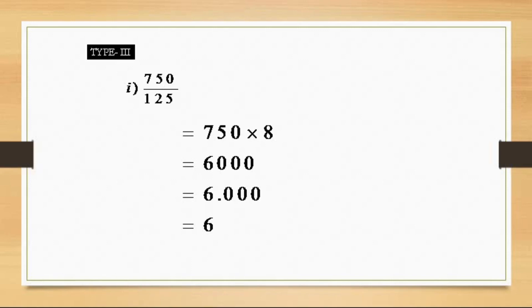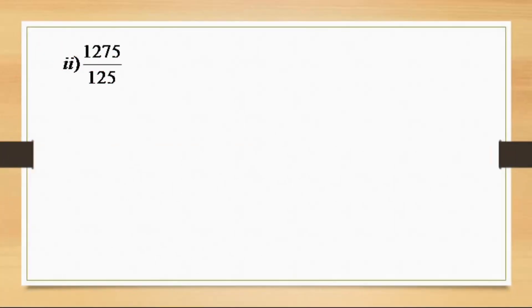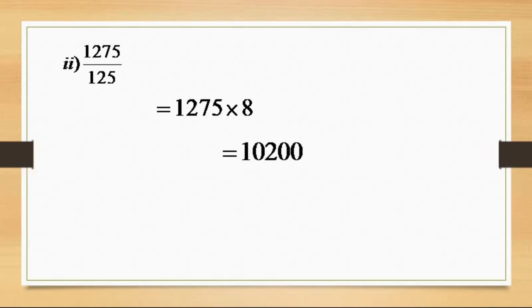Another example for division by 125: 1275 divided by 125. We multiply 1275 by 8 to get 10200. Taking the decimal three digits from the right, we get 10.200, which is 10.2 as the answer.